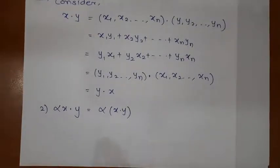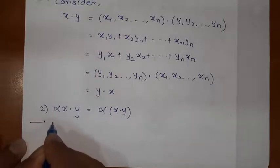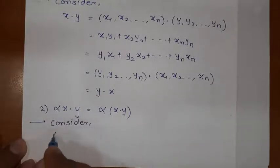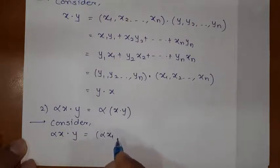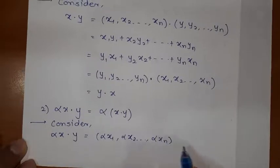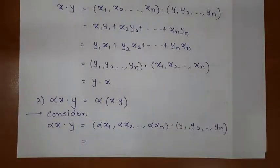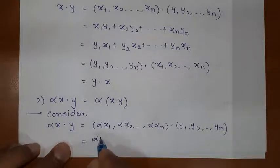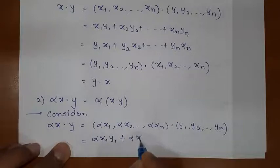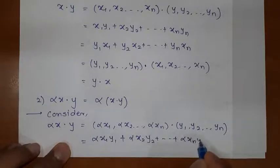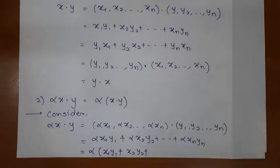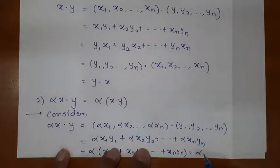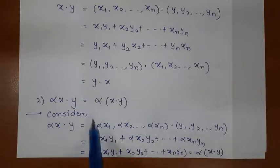Let us prove the second property: alpha times X dot Y is equal to alpha into X dot Y. I will start with the left-hand side. Alpha X means you have to multiply each element by alpha, so this is alpha X1, alpha X2, alpha Xn, dotted with Y1, Y2, up to Yn. The inner product gives alpha X1 Y1 plus alpha X2 Y2 plus and so on alpha Xn Yn. We can take alpha common, leaving X1 Y1 plus X2 Y2 plus and so on Xn Yn in the bracket — which is nothing but alpha into X dot Y. In this way we proved this property.